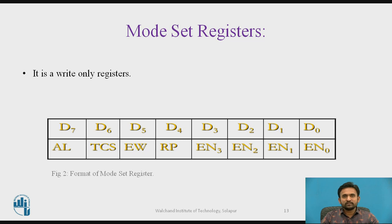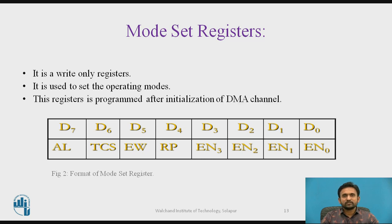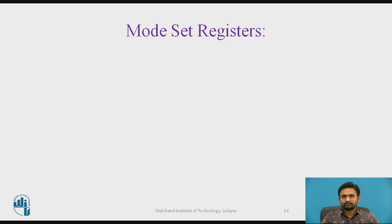About the mode set register: it is a write-only register used to set the operating modes, and this register is programmed after initialization of the DMA channel. It is a one-byte register with different flag bits, each deciding a different operating mode. The D7 flag bit is the Auto Load mode: if AL equals 1, it is in Auto Load mode; if AL equals 0, it represents rotating mode.